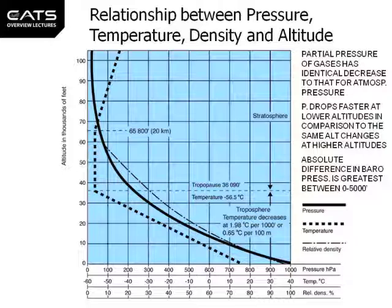The bold dotted line represents temperature. At mean sea level we are starting at plus 15 degrees Celsius, and temperature does decrease in a linear fashion, a straight line, until the height of the tropopause, the average height of the tropopause is reached 36,090 feet, where the temperature is reached minus 56.5 degrees Celsius.